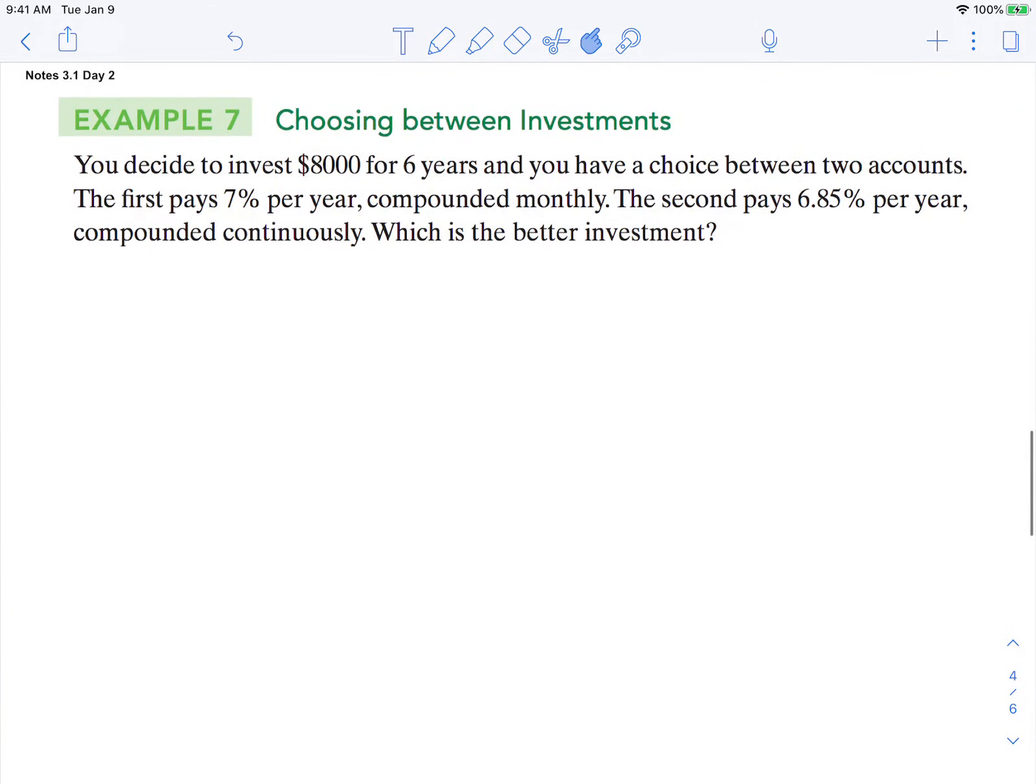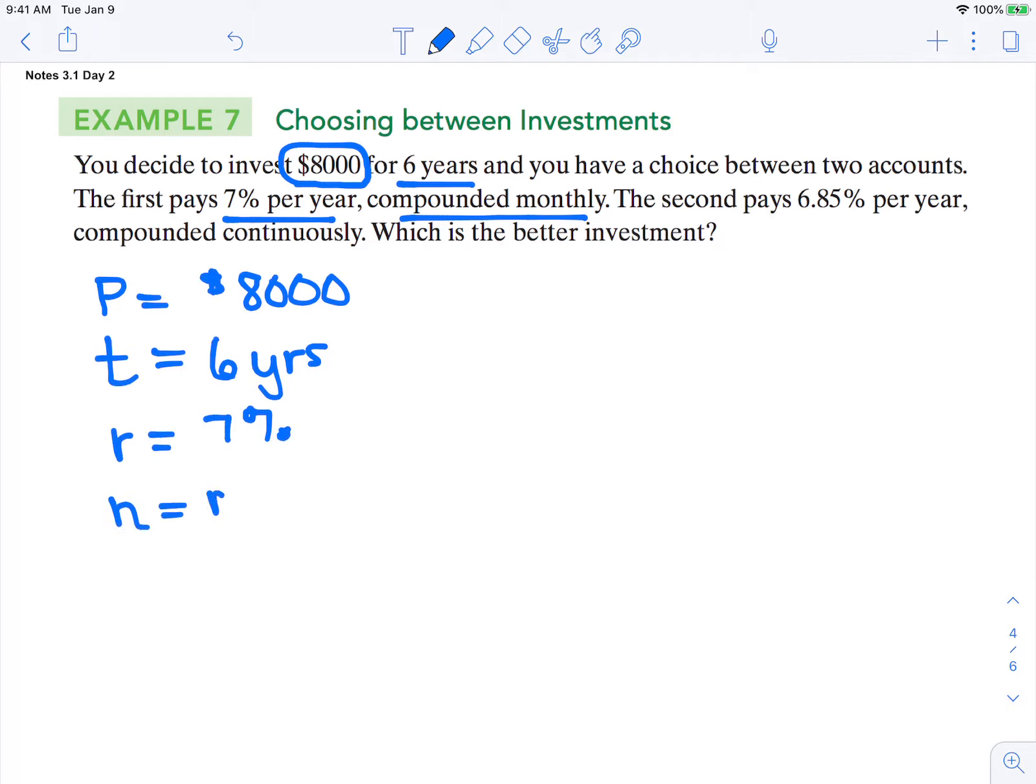So let's do an example. We want to invest $8,000, so that's our initial amount, our principal. We're going to invest it for six years. The first account pays 7% per year compounded monthly. So you have an interest rate of 7% and it's compounded monthly.